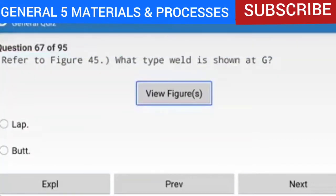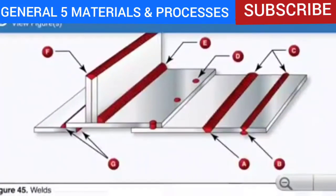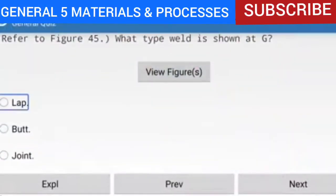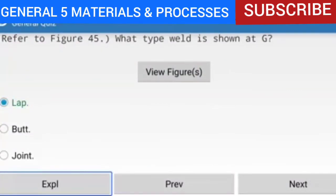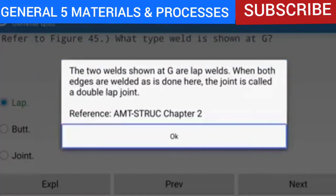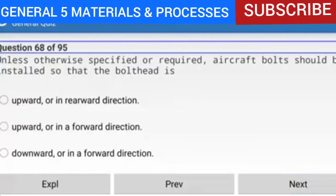Question 67 of 95: Refer to figure 45 — what type weld is shown at G? The answer is lap weld. The two welds shown at G are lap welds. When both edges are welded as done here, the joint is called a double lap joint.